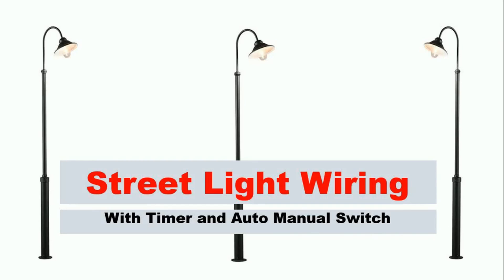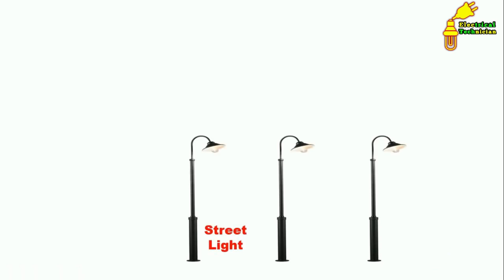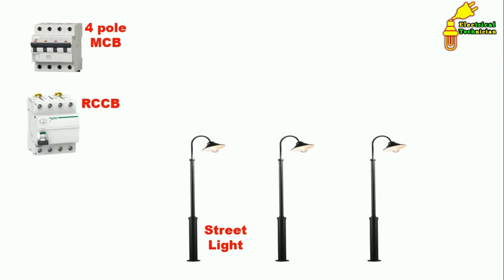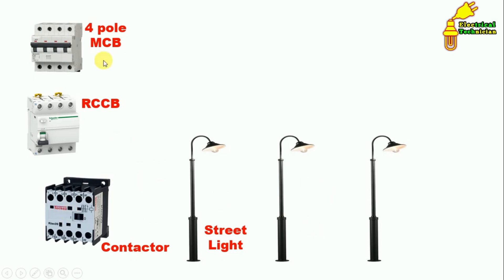Today we are going to learn how to do distribution of power supply for street lights. First of all, we use a four-pole MCB, and to protect from earth fault, an RCCB is also used. After this, to turn on and off, we are using a contactor. The MCB provides protection from overcurrent and short circuit, and the RCCB gives protection from earth fault.